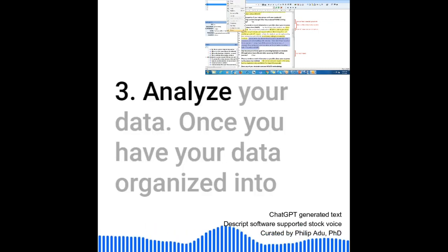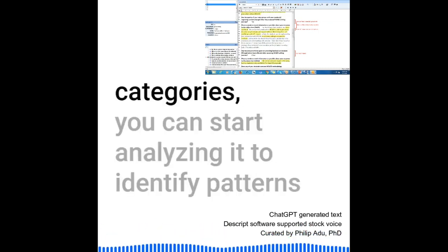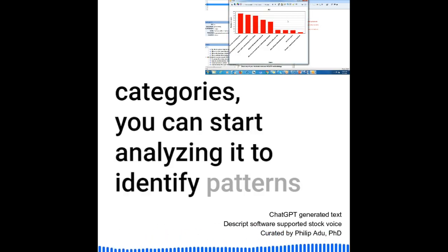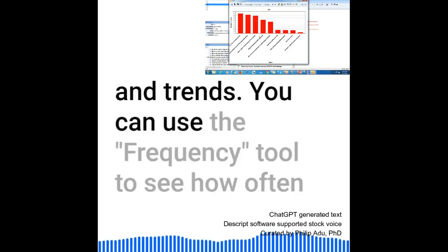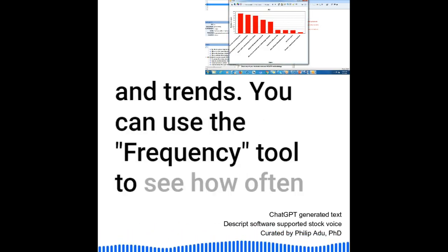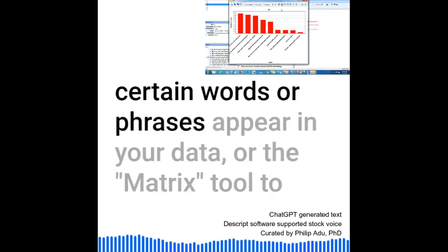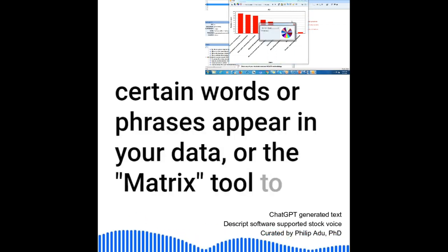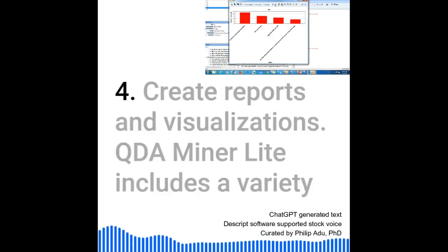Step 3: Analyze your data. Once you have your data organized into categories, you can start analyzing it to identify patterns and trends. You can use the Frequency tool to see how often certain words or phrases appear in your data, or the Matrix tool to see how different categories relate to one another.